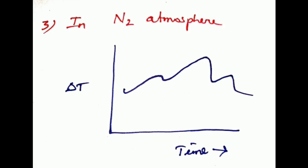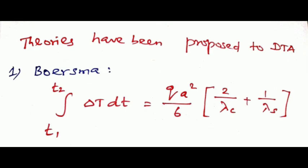Different theories have been proposed in differential thermal analysis. One is Boersma theory. The formula with explanation: integral from T1 to T2 of delta T dt equals Q times a squared by 6 times